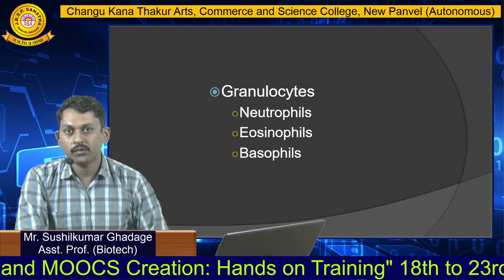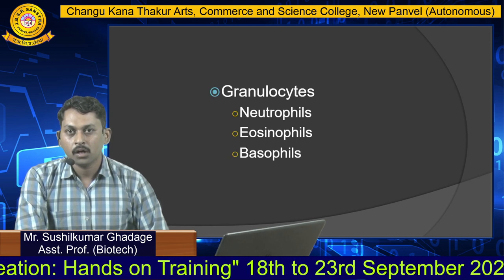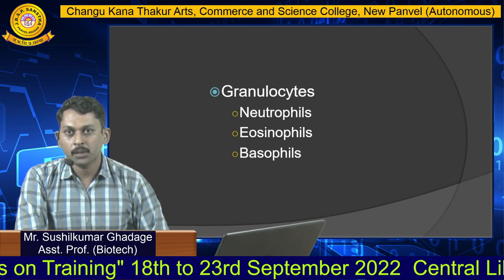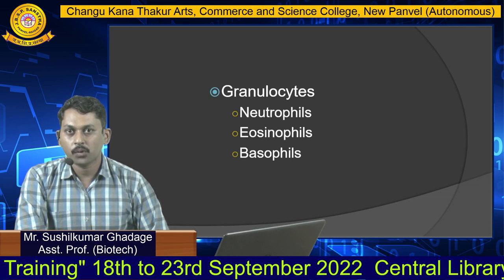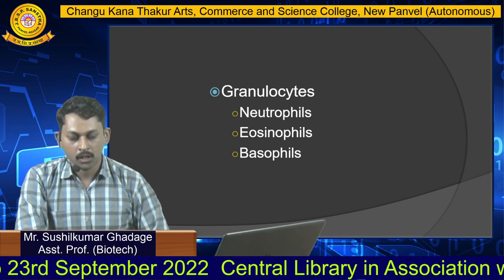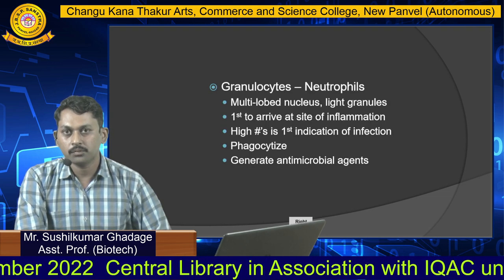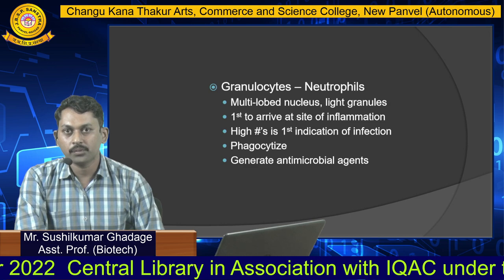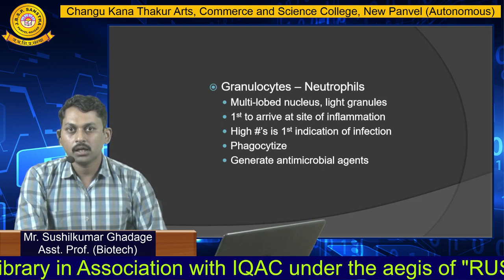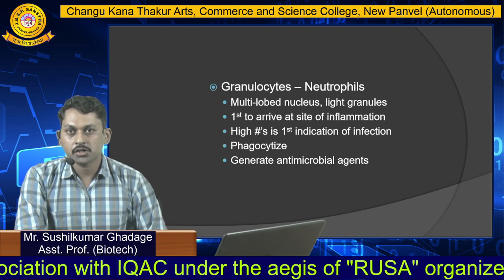These three types are classified on the basis of nucleus morphology and staining properties. First, we will discuss neutrophils. Neutrophils contain a multi-lobed nucleus in their structure.